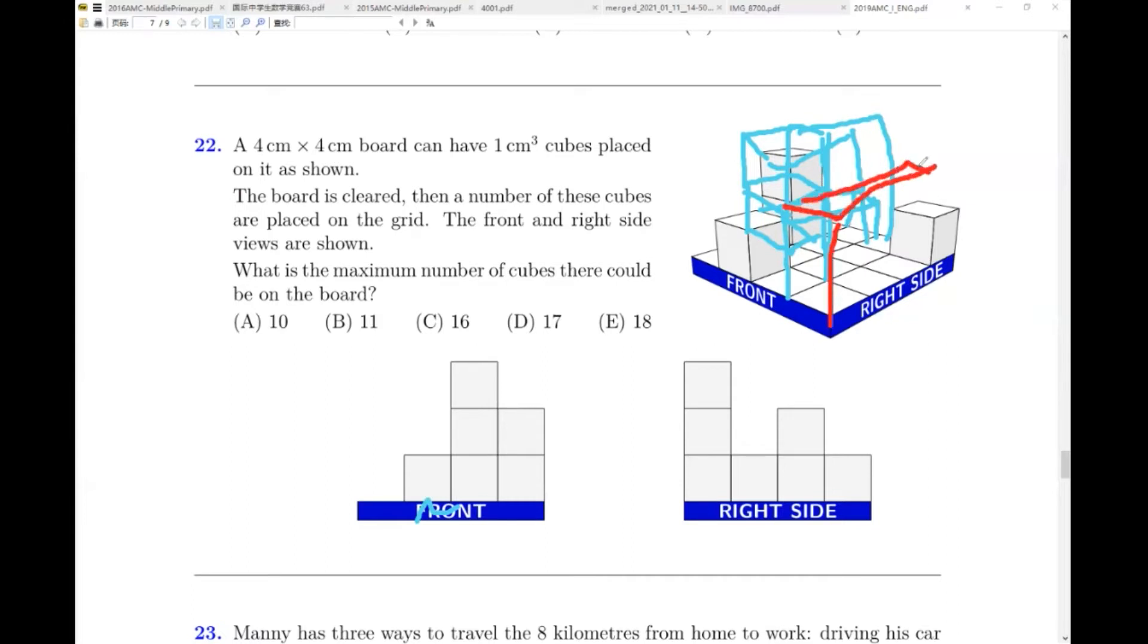Good. So we first find out everything from the front view. Two layers high. Good. Now we finish the front view. Now we analyze the right side view, just same as the front view. Column by column, this time row by row. First we analyze the first row.